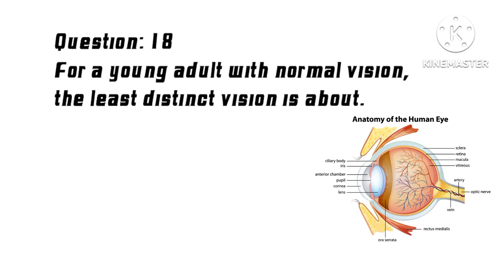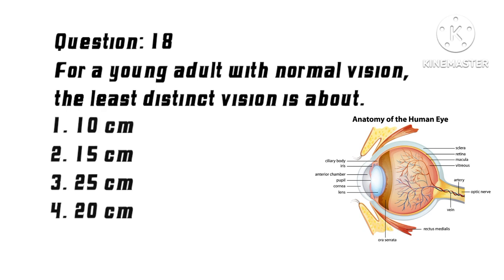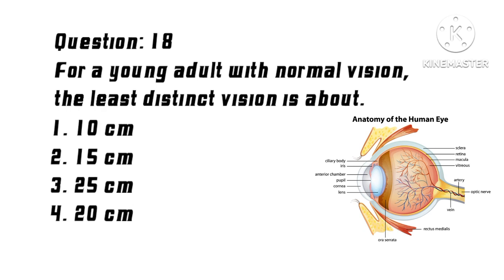Question 18: For a young adult with normal vision, the least distance of distinct vision is about? Options: 1. 10 cm, 2. 15 cm, 3. 25 cm, 4. 20 cm. Correct answer: 3. 25 centimeters.